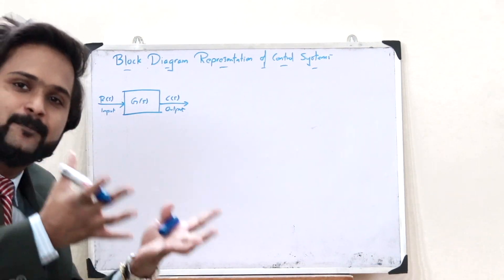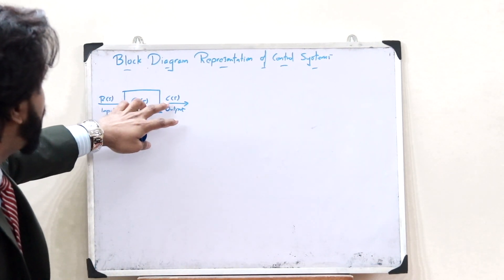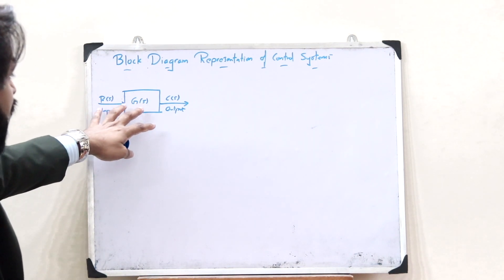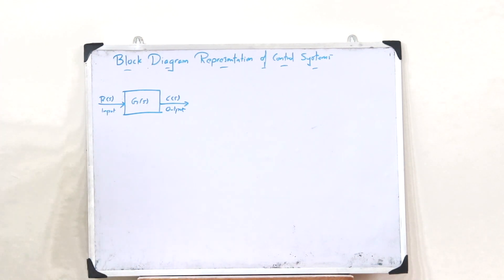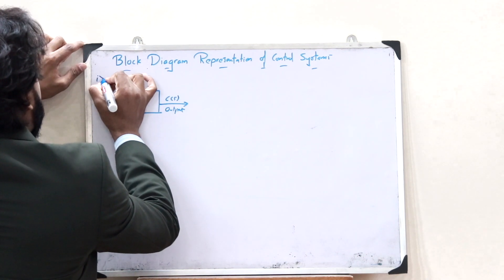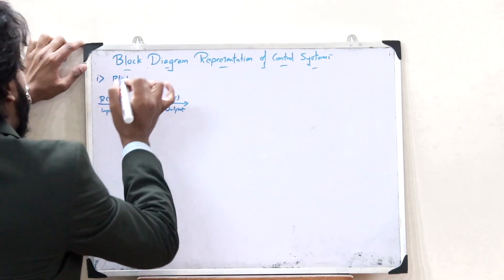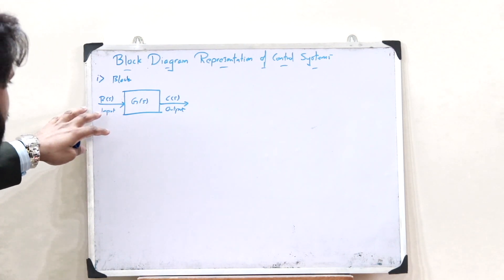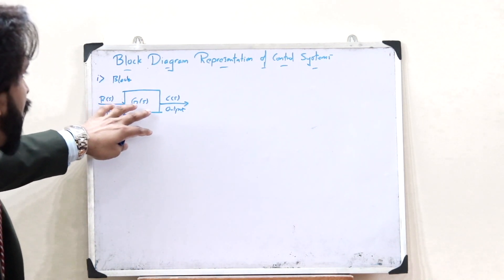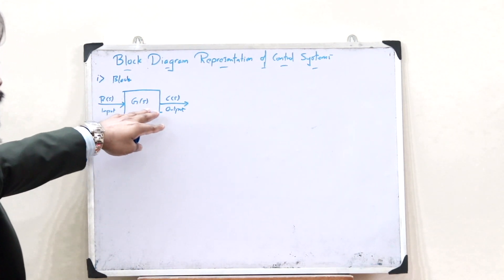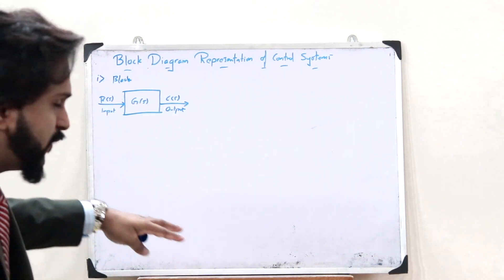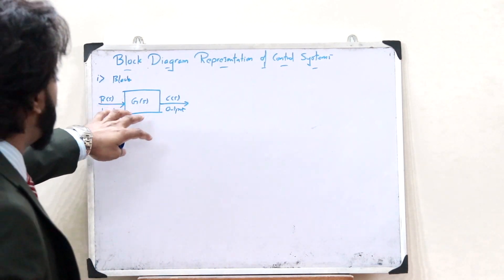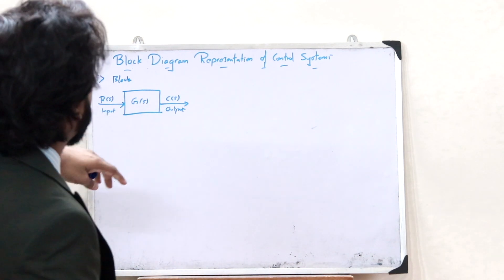A transfer function is simply the ratio of the output divided by the input. So G(S) is the transfer function of this particular block. The block has an input and an output, and the transfer function is given as G(S) = C(S) / R(S).